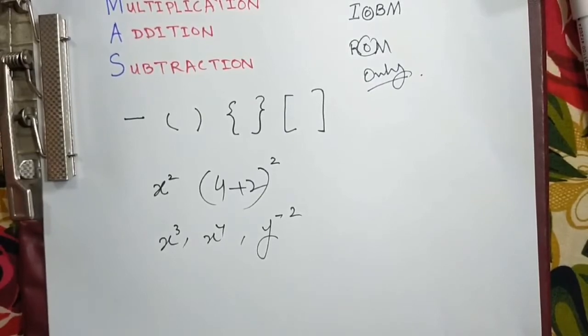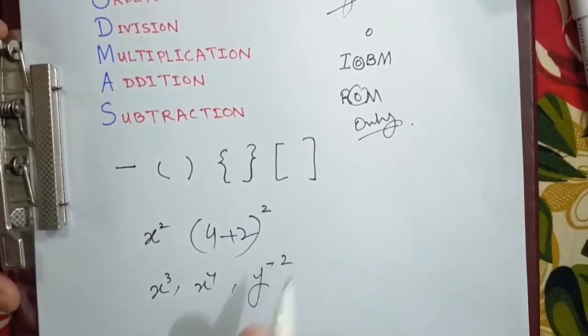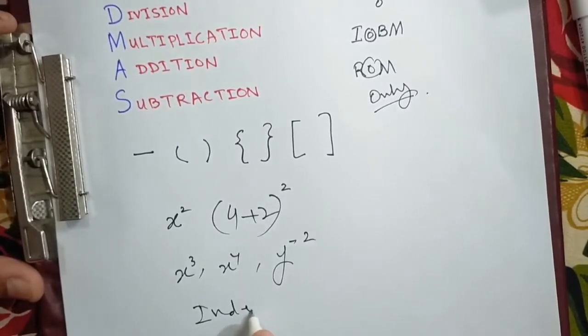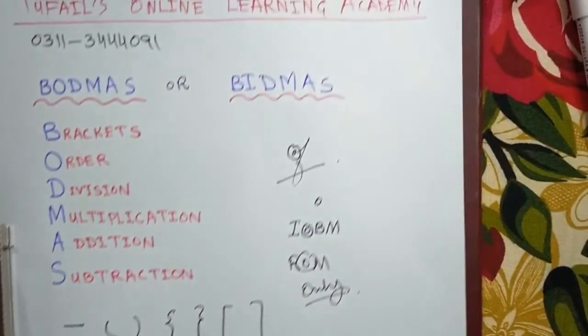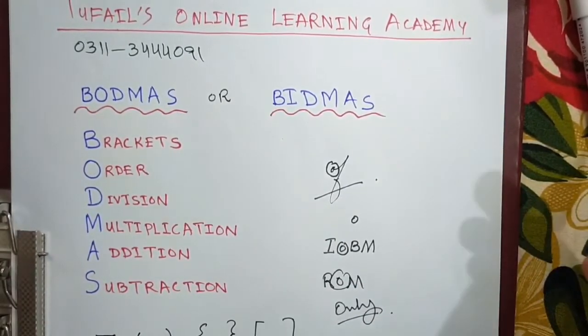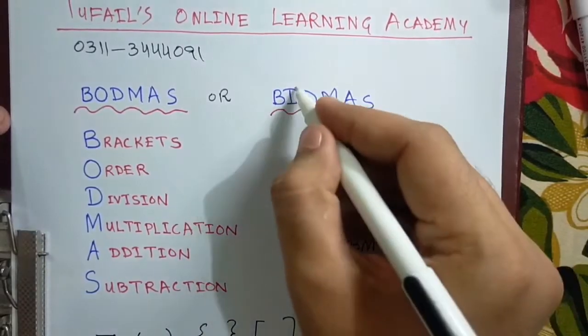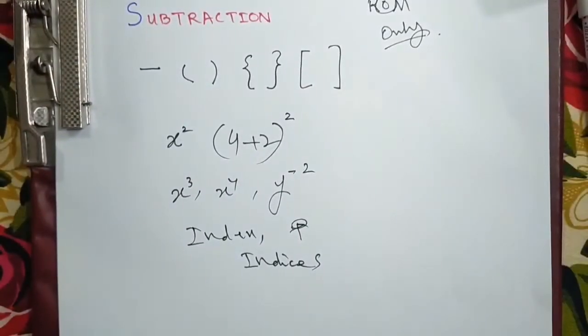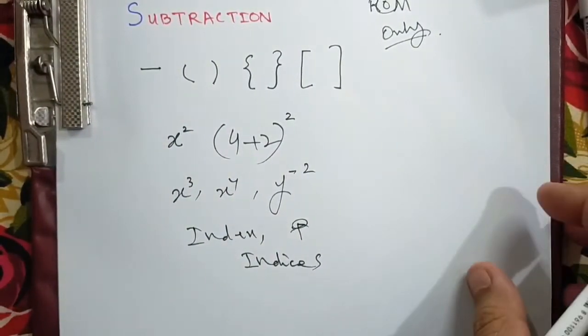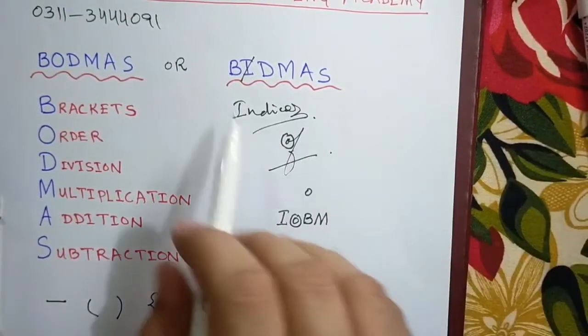The parallel of index is indice, index its parallel is indice, okay. That is why in many schools, especially in international schools, it is taught as BIDMAS because this I stands for indices. It's not necessary that there should be a power to, or any expression or number, there can be any power. So this is better, I think in my idea we should teach our students as BIDMAS.